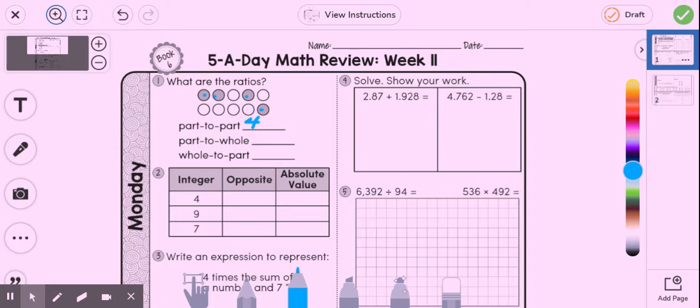So I'm going to go ahead and write four to, and then my part that's not shaded is one, two, three, four, five, six. So four to six is my part to part. My part to whole is four to ten because that's how many circles there are in all. And then for whole to part, I simply change the order of my numbers from ten to four.